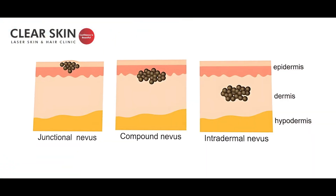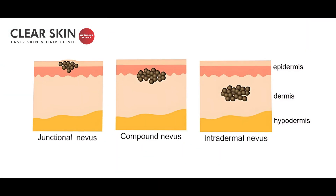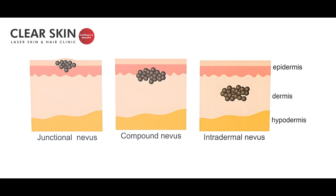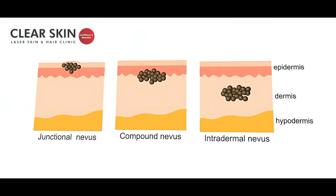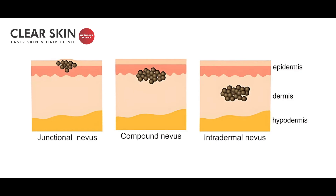The first type by depth is junctional nevus, which is the most superficial. It is usually flat and darkly pigmented — black or brown colored. The second type is intradermal; as the name suggests, it is present deep in the dermis, slightly elevated, and usually skin-colored. The third type is compound nevus, as seen in this patient. Compound means it has both epidermal and dermal components, sometimes has hair on it, and is usually slightly elevated and brown colored.